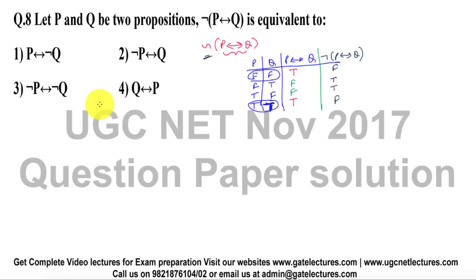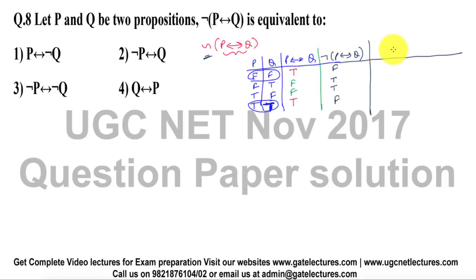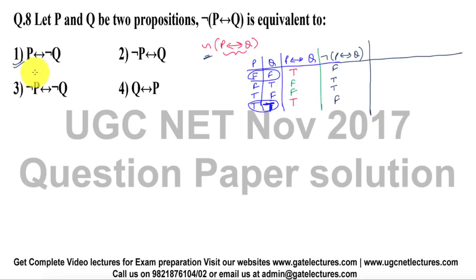We just have to check which of the four options matches these values. I'm explaining it this way because it will be a lengthy process, but you will be able to understand it thoroughly. This is a direct identity — a direct property of double implication — which I will explain in this video. The first option says P double implication of negation of Q.